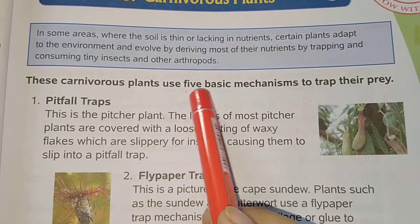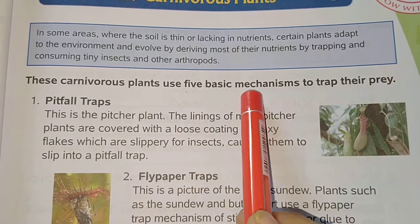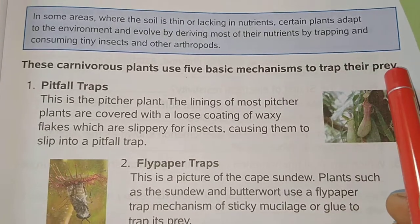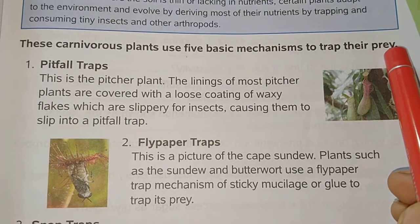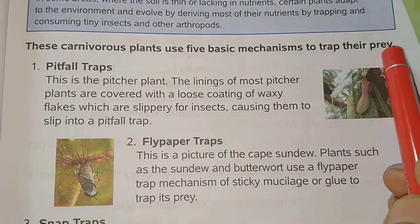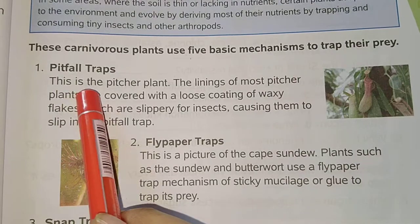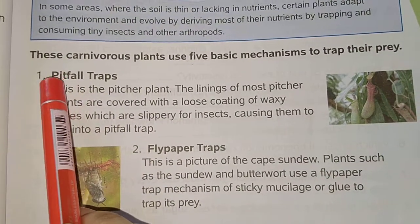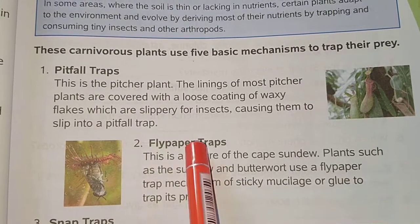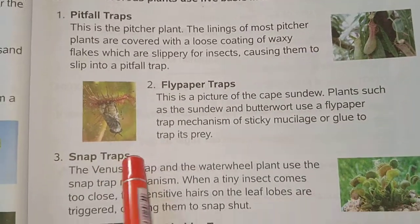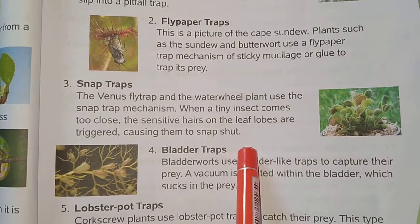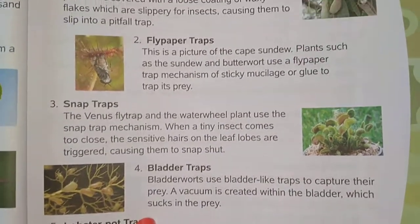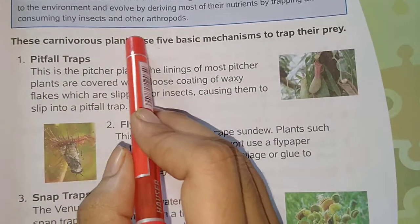We will study the carnivorous plants which are used to trap their prey. First, we will tell you some of the carnivorous plants: pitfall trap, fly paper trap, snap trap, bladder trap, and lobster pot trap. These are the carnivorous plants we will study.